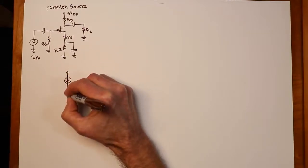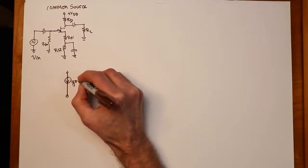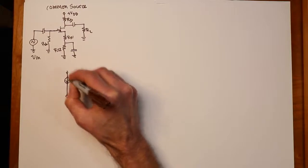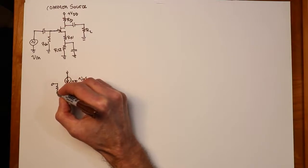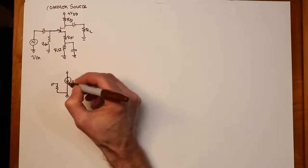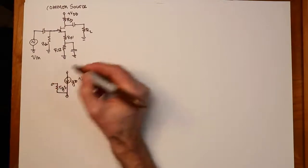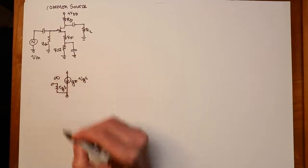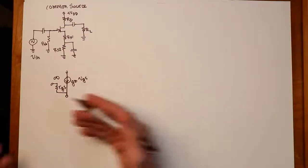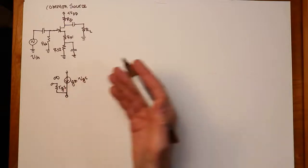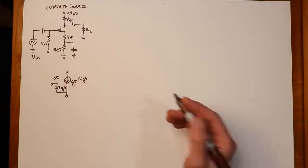That looks something like this. We have a current source, controlled current source, this value of ID is equal to GM times VGS, and it's got this direction for a positive input. And then hanging off the gate, we have this resistance, RGS. And we say, practically speaking, at least at low frequencies, that's infinity. It's not really infinity, it's a really big value, but at least at low frequencies we can approximate it, compared to other resistances in the circuit, we can approximate it as infinity.